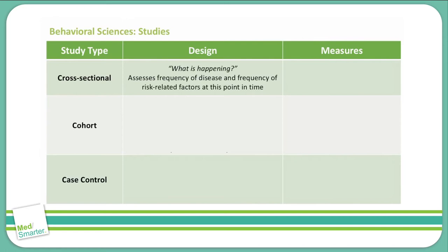The design of a cross-sectional study asks: what is happening? This is going to look at the frequency of the disease and the frequency of the related risk factors associated at that specific point in time. This is like taking a steak and cutting it in half and seeing how the doneness of that steak is at that particular point — it might be different at various points, but at that one specific spot, this is what is happening.